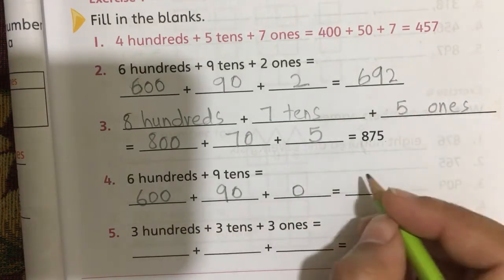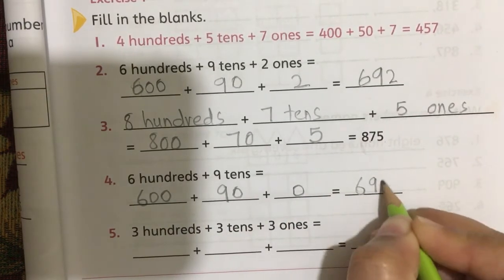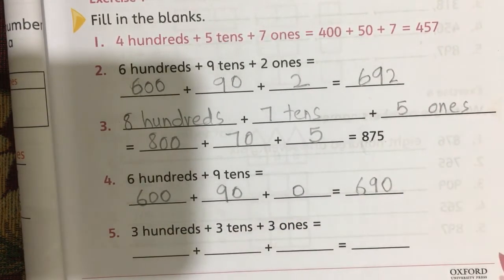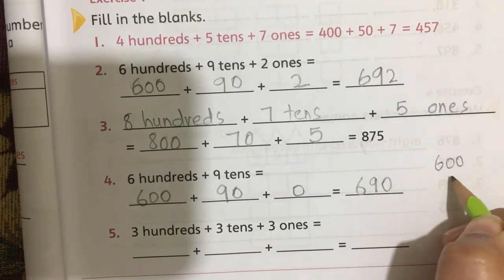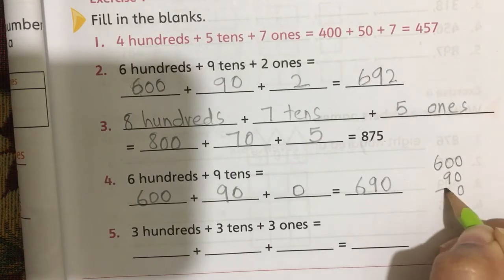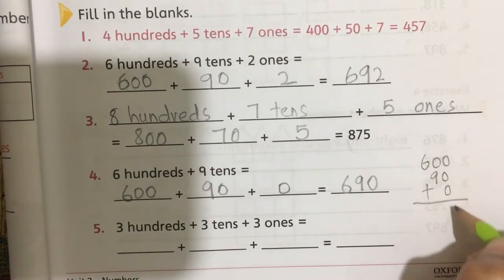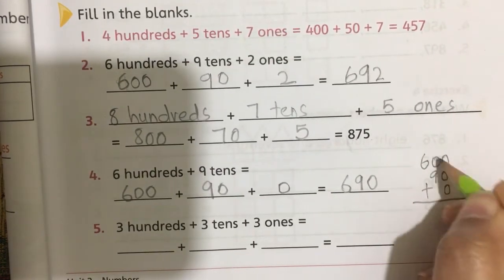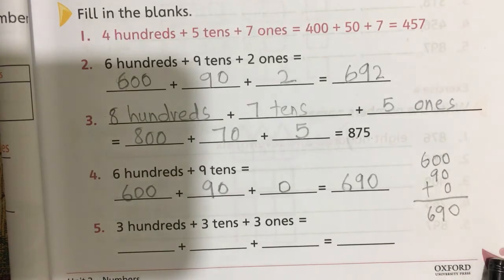So six hundred plus ninety plus zero — when we add these three numbers, zero ones, nine tens, and six hundreds, it becomes six hundred and ninety.